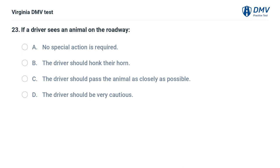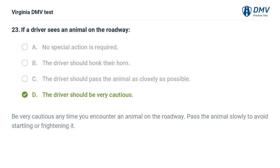If a driver sees an animal on the roadway: A. No special action is required, B. The driver should honk their horn, C. The driver should pass the animal as closely as possible, D. The driver should be very cautious. The correct answer is D: The driver should be very cautious. Be very cautious any time you encounter an animal on the roadway. Pass the animal slowly to avoid startling or frightening it.